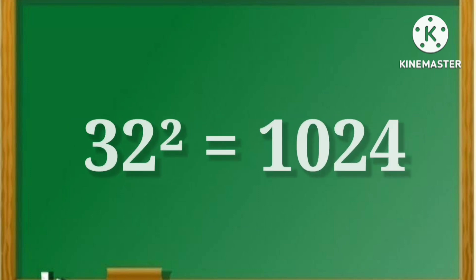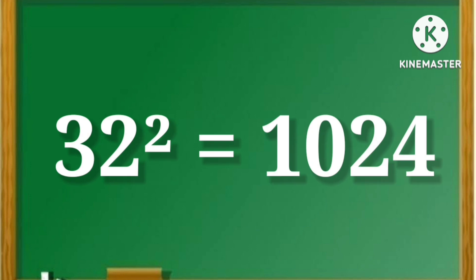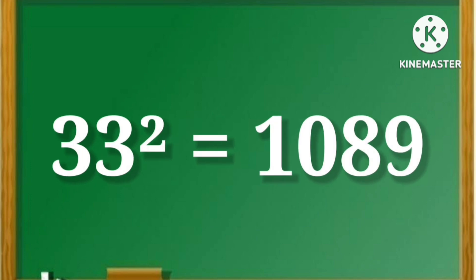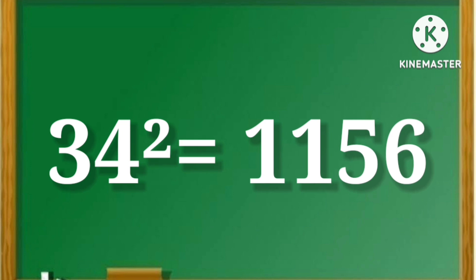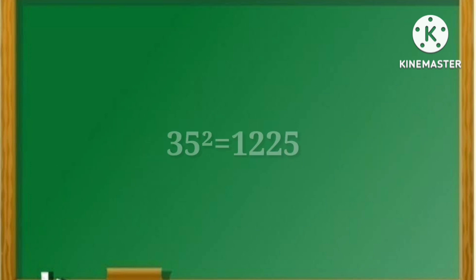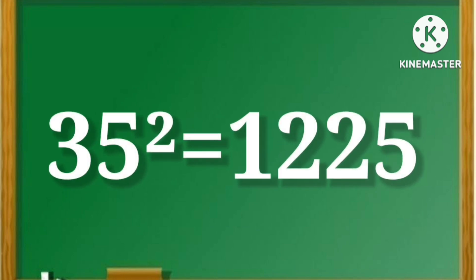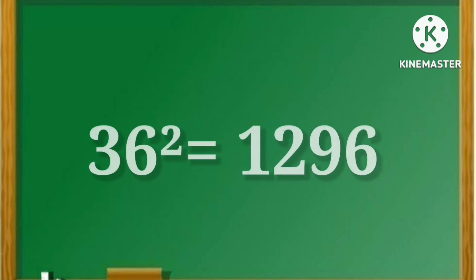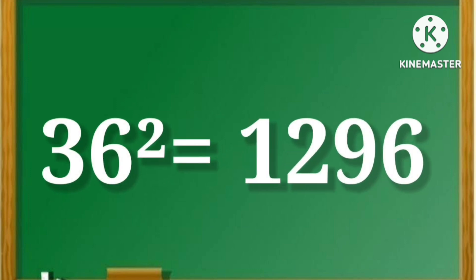32 square is equal to 1024. 33 square is equal to 1089. 34 square is equal to 1156. 35 square is equal to 1225. 36 square is equal to 1296.